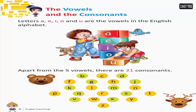The vowels and the consonants. Letters A, E, I, O and U are the vowels in the English alphabet. Apart from 5 vowels, there are 21 consonants.